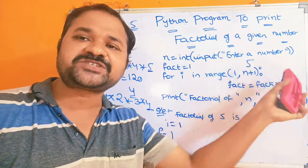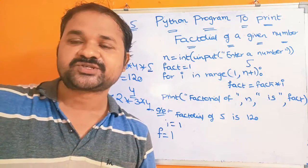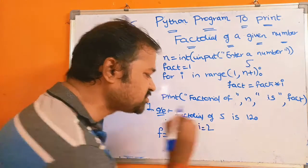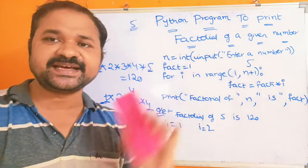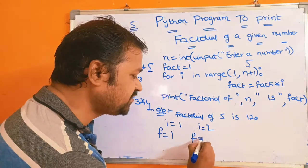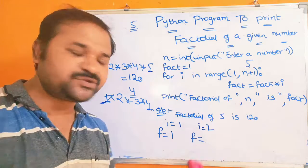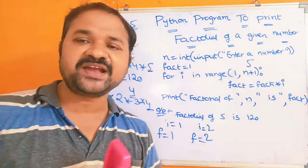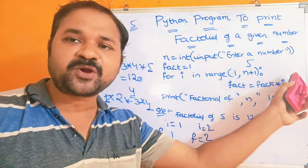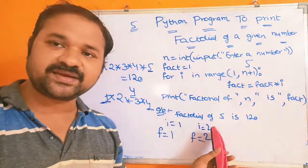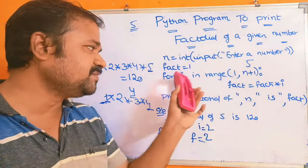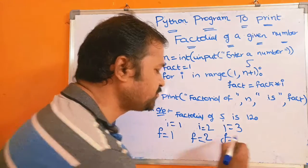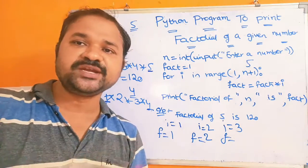In the next iteration, 1 is added to i. i becomes 3. 3 ≤ 5, condition is true. fact = fact × i = 2 × 3 = 6. Then 1 is added again, i becomes 4. 4 ≤ 5, condition is true. fact = 6 × 4 = 24.